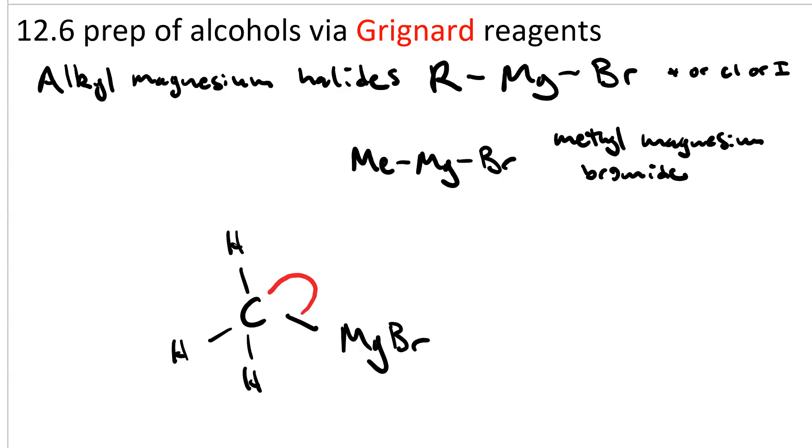The sigma bond turns into a lone pair on the carbon. The resonance structure that I find more useful is in the ionic state. You can see here that you've got a carbanion, which is a very strong nucleophile, also a pretty strong base.